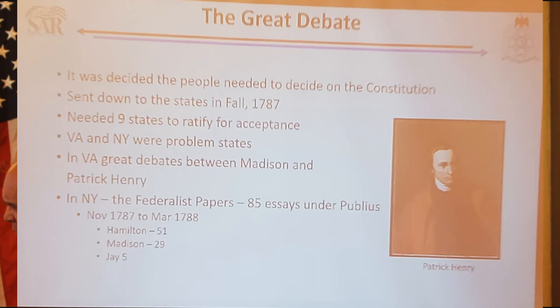Hamilton wrote about 52 Federalist Papers, Madison wrote 29, and John Jay wrote about five. All those Federalist Papers were targeted at New York—not at the whole US, just at New York. It was propaganda going into New York, published under the name 'Publius.'